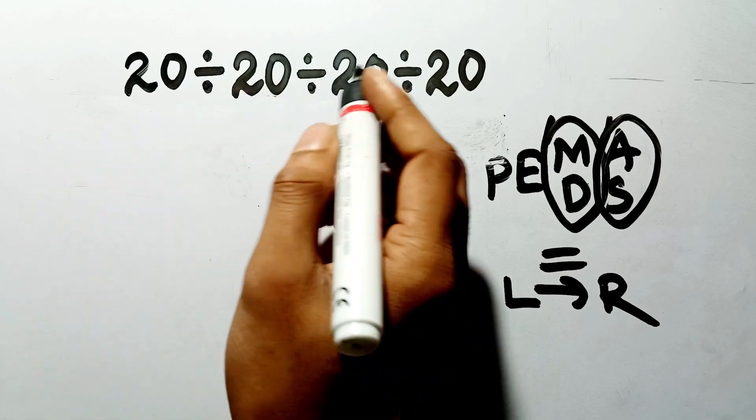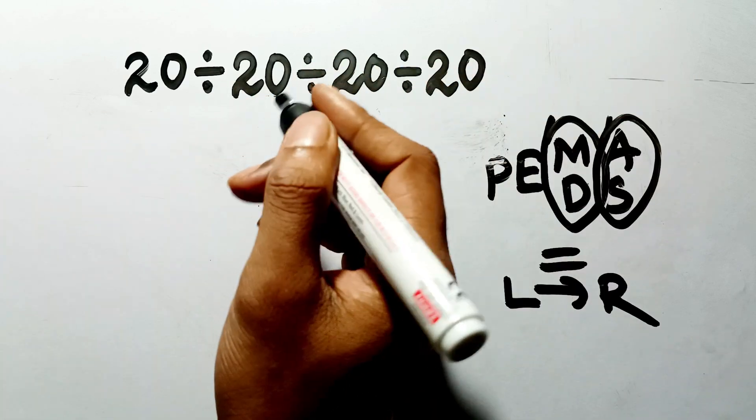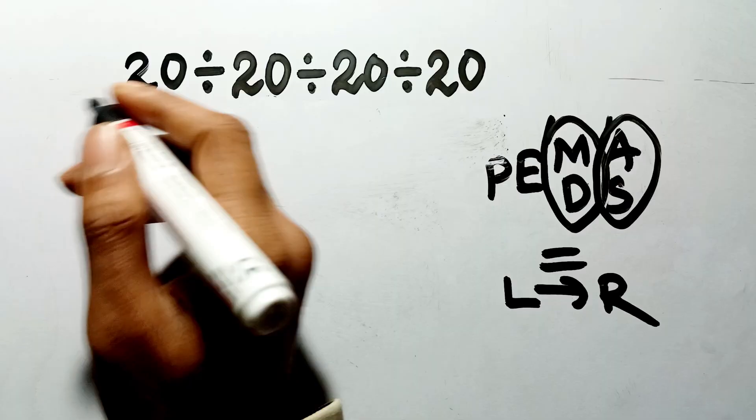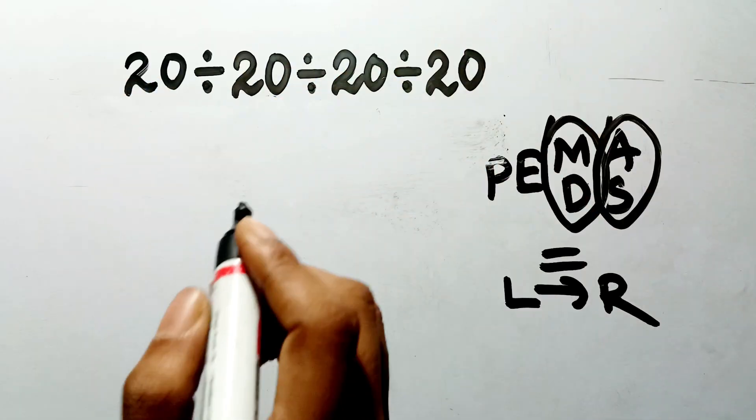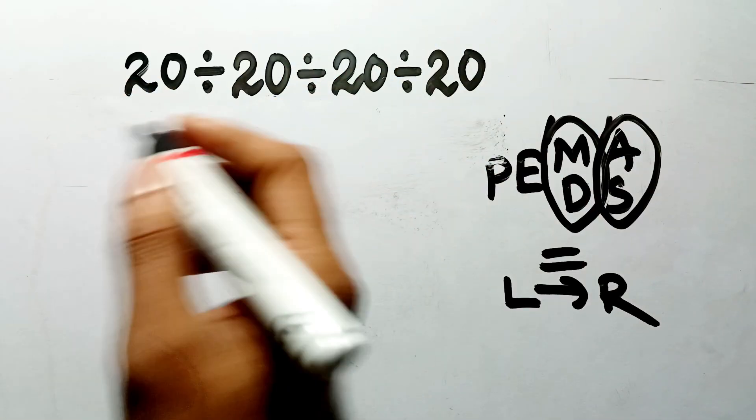We usually prefer nice, round numbers, so our brain jumps to the easiest integer solution, which makes us feel smart, but is actually completely wrong.